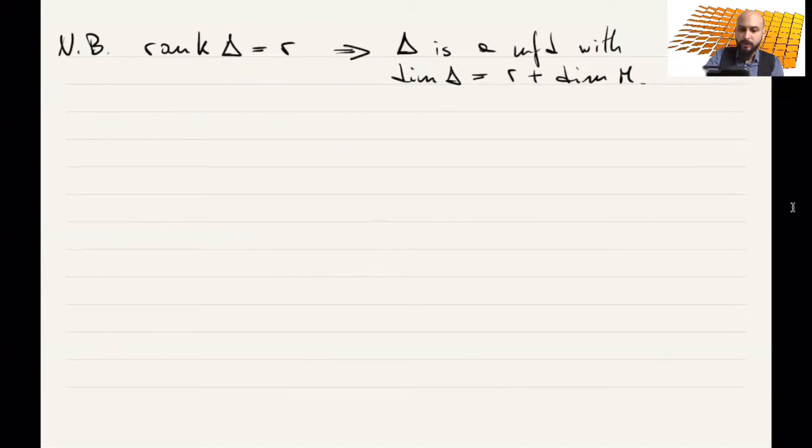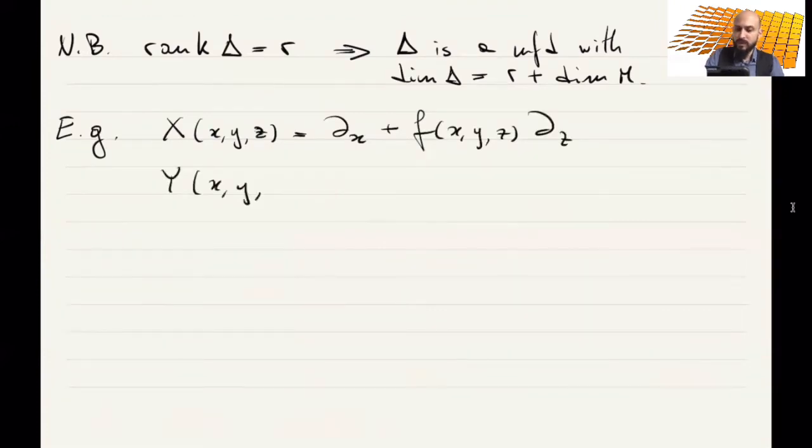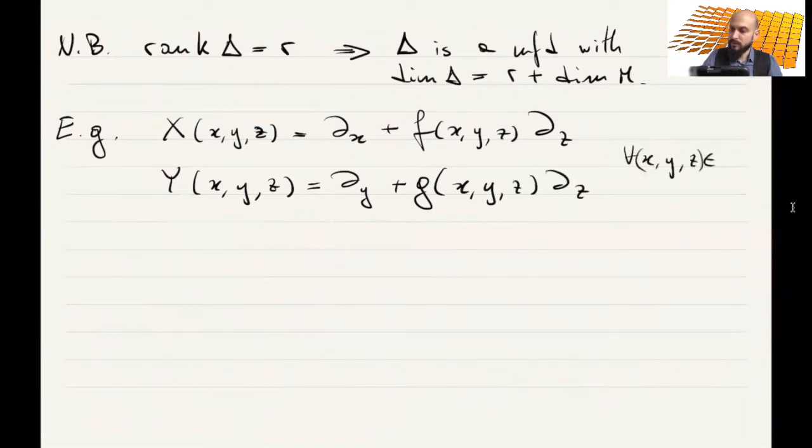Let's see immediately an example that is generalizing the example we were discussing at the beginning with the Heisenberg group, but I will make it a little bit more general. Suppose you have a vector field in R³ of this form dx plus f(x,y,z) dz, and another one dy plus g(x,y,z) dz. This is for all (x,y,z) in R³.